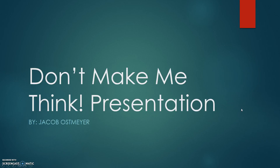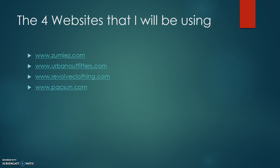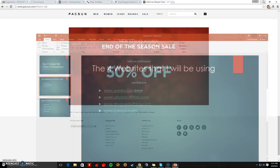Hello, my name is Jacob Osmeyer and this is my Don't Make Me Think presentation. Today I will be discussing four websites and their usability. The first website I'll be discussing is zoomies.com, the second is urbanoutfitters.com, the third is revolveclothing.com, and the fourth is pacsun.com. These four websites are all clothing websites, but some have easier usability than others. Let's get started with zoomies.com.